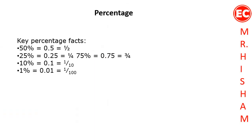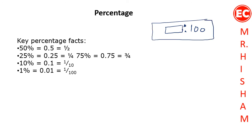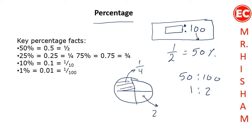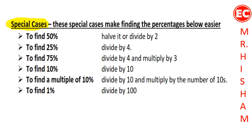We can define percentage as a ratio where the second term is always 100, so we are comparing between two quantities. We can also consider percentage as another form of writing fractions. For example, instead of writing one half, you can write it as 50%, which is 50 to 100, the same as a ratio of 1 to 2. So the simple definition of percentage is another form of a fraction or ratio where the second term is 100.